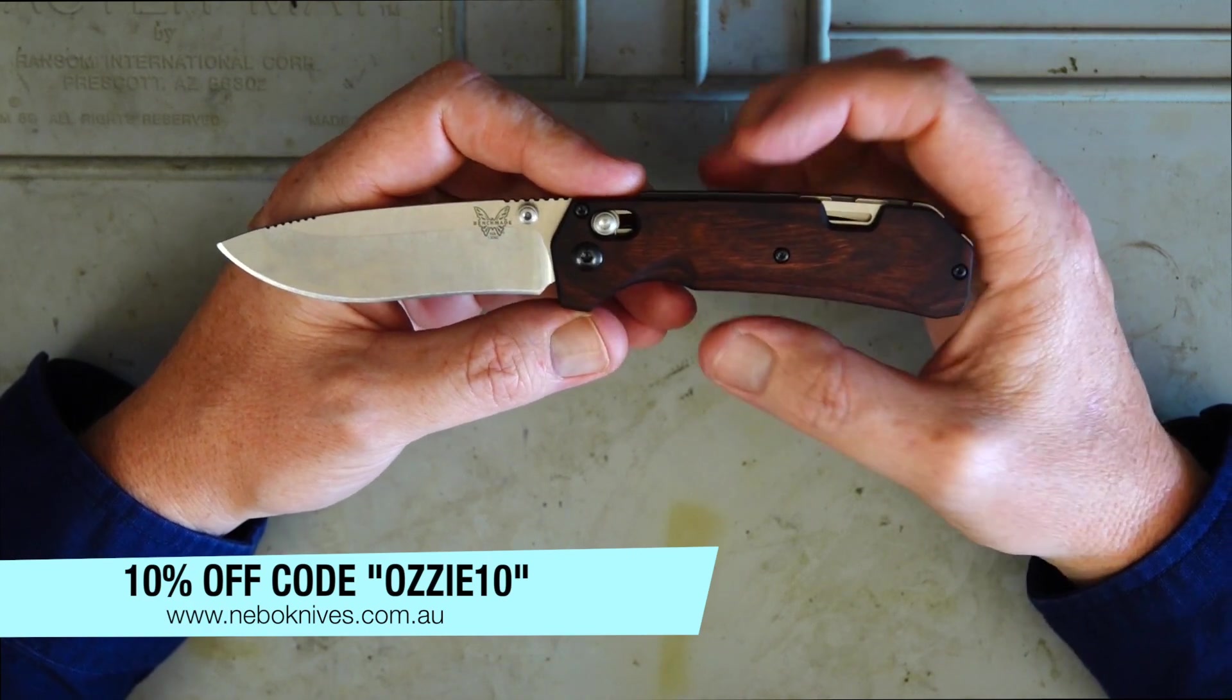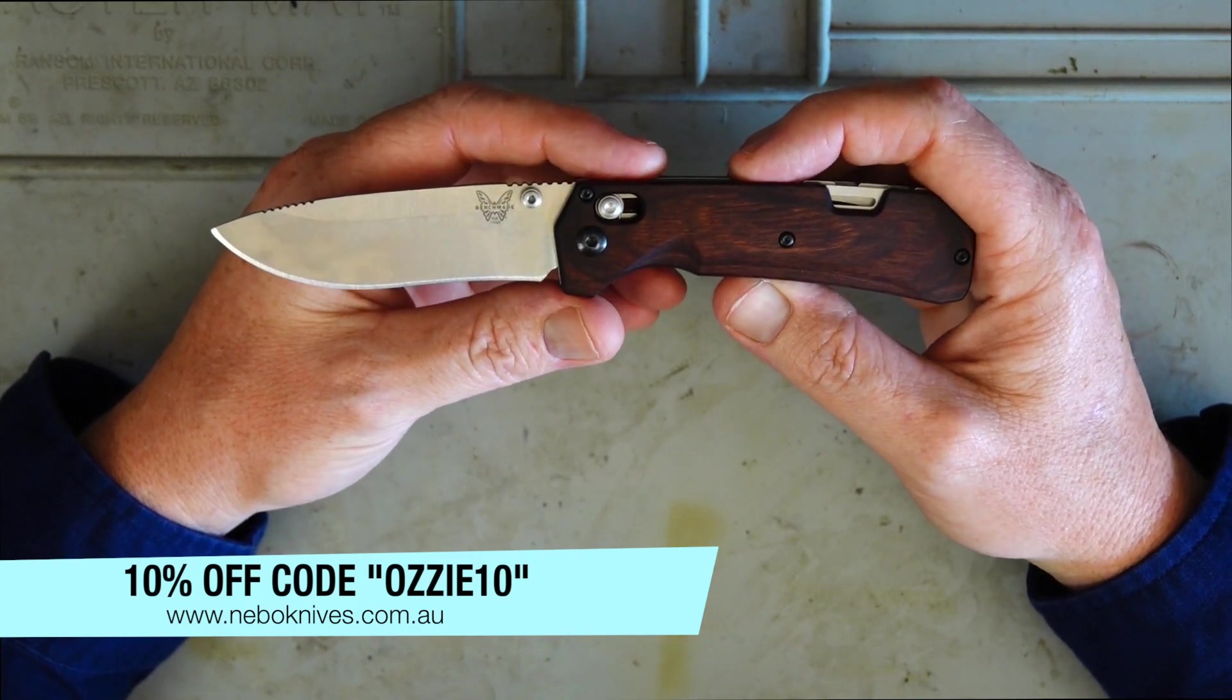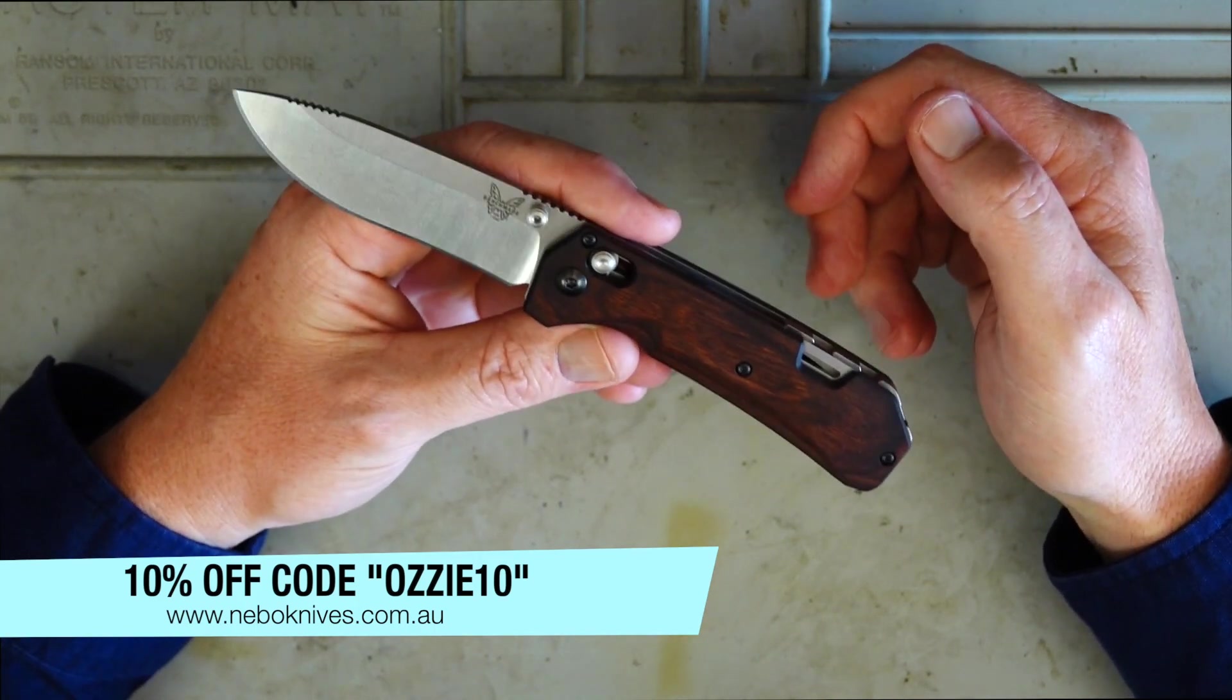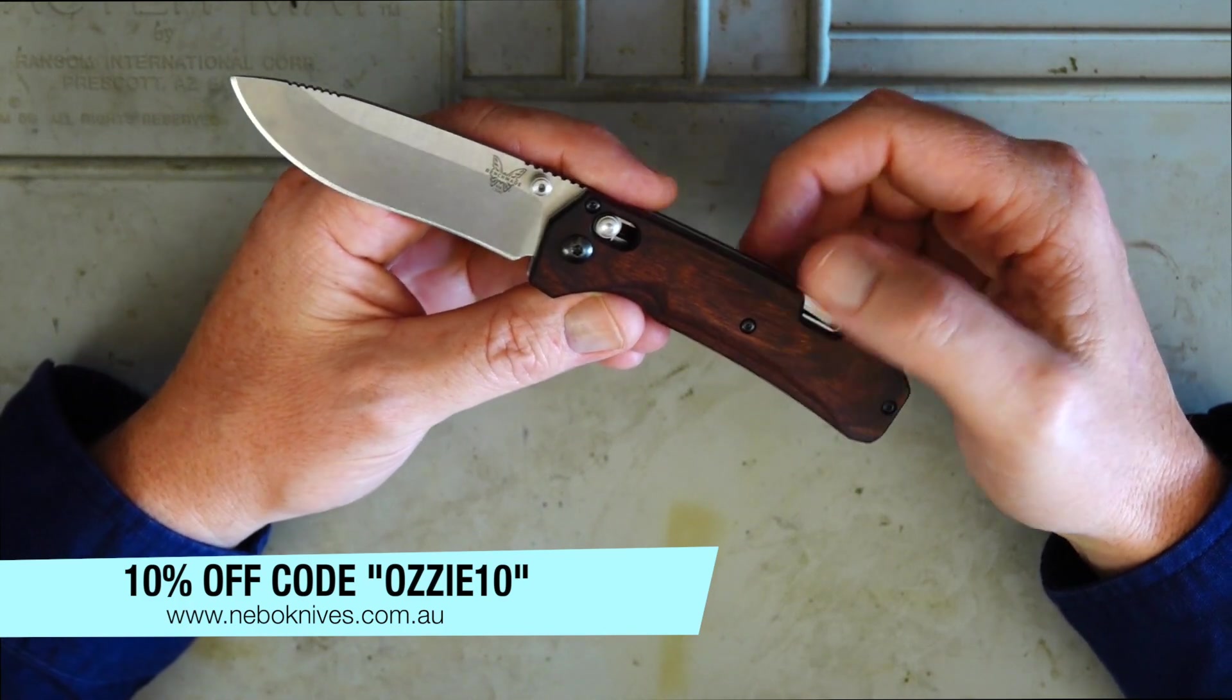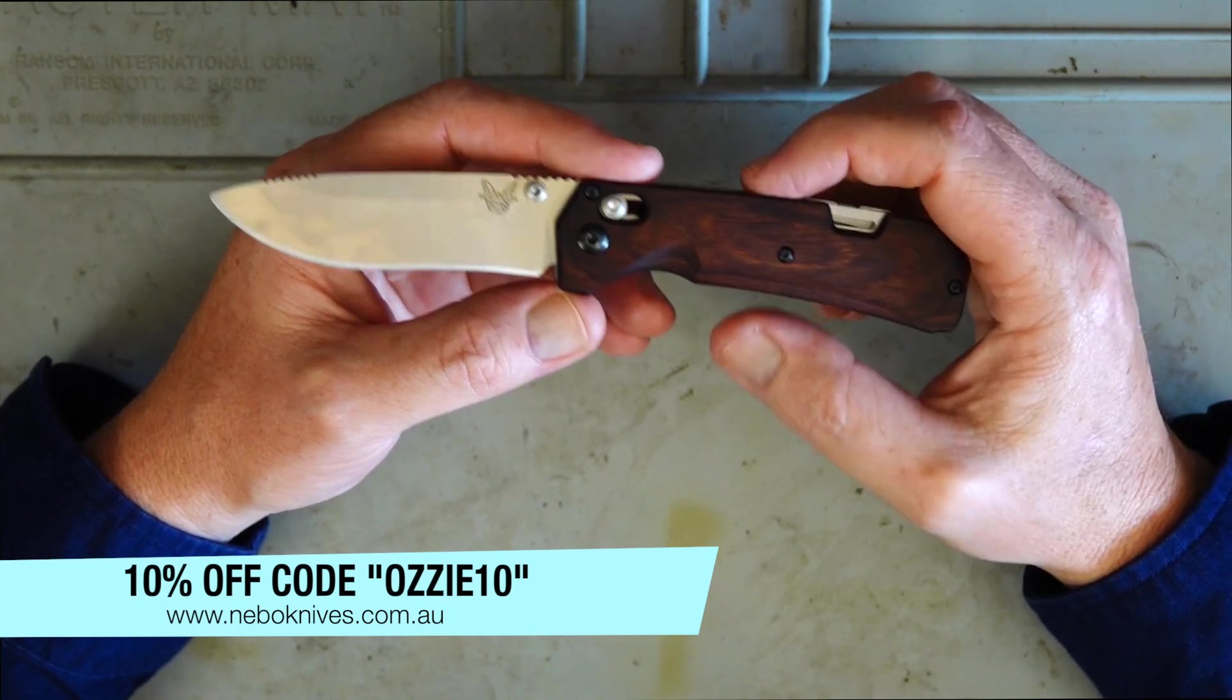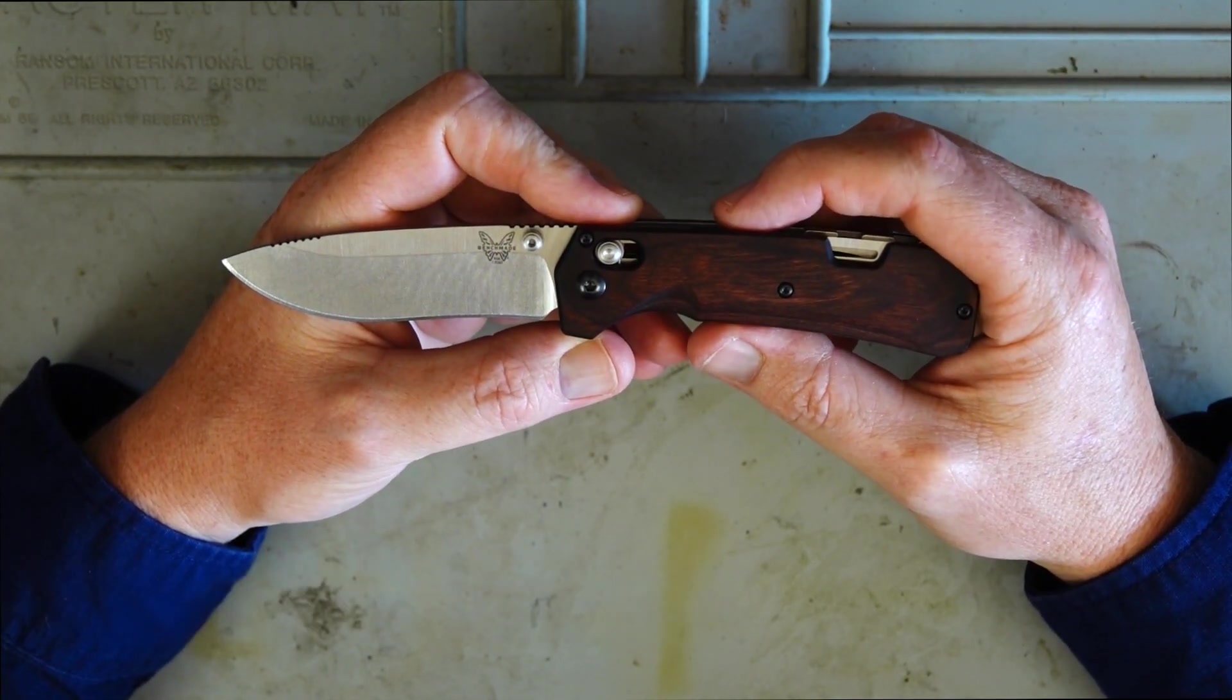So if you want to take advantage of that guys, 10% off is going to save you some good amount of money on a high-end knife like this. All you need to do is just jump onto their website NeboKnives.com.au and throw in the code Aussie10 and it'll just come straight off the total there.